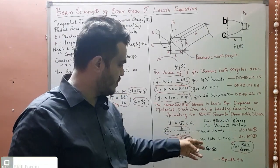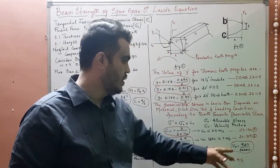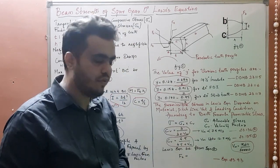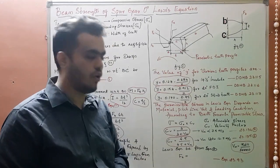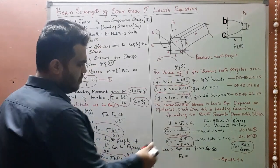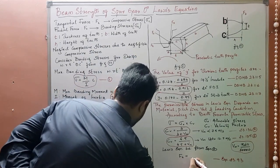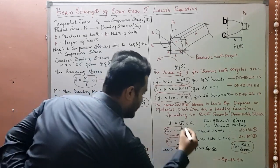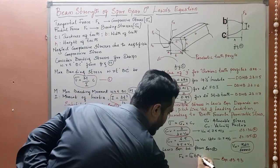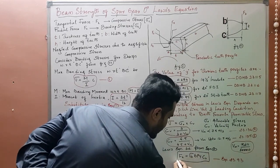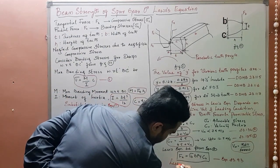You need to find the mean velocity using the appropriate equation. If the velocity is less than 7.5 m/s, use the corresponding Cv equation; if the velocity is up to 12.5 m/s, use the other equation. Once we substitute the σ value into the Lewis equation, we get the final Lewis equation: Ft = σ₀ × B × P × y × Cv. This is the complete Lewis equation.